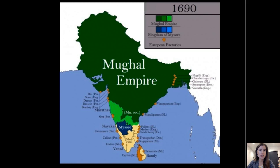Then we will move into Thailand and look at an example of the walking Buddha — the Sukhothai walking Buddha — and also the example of the Emerald Buddha in Bangkok today, which is still a really important object, an important icon in Bangkok that's still deeply linked to the king of Thailand. So we'll end there.